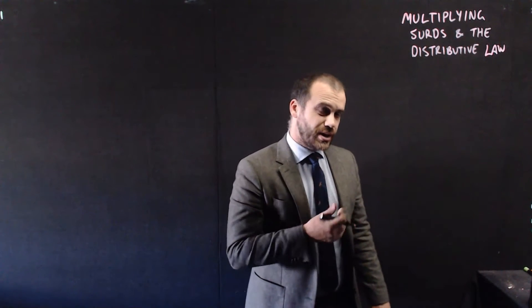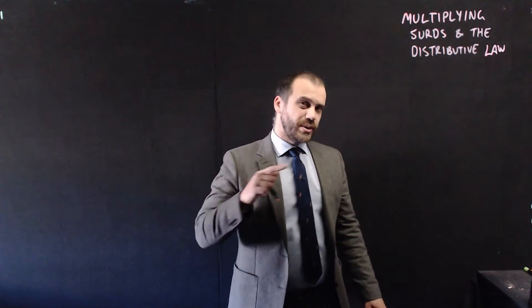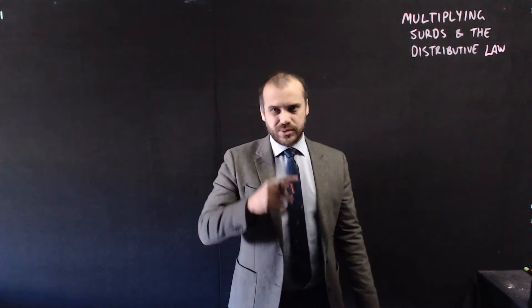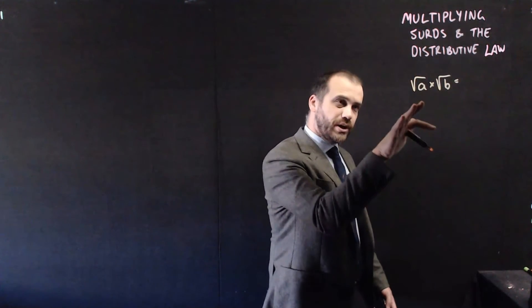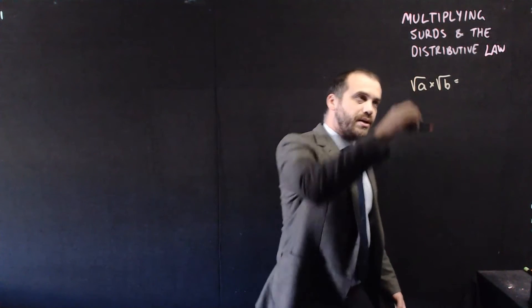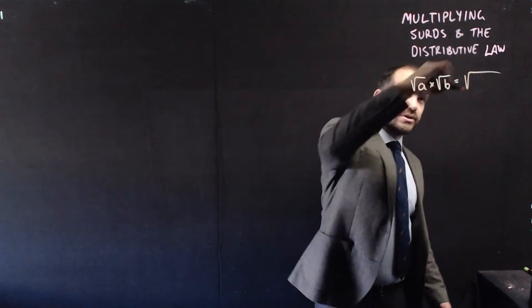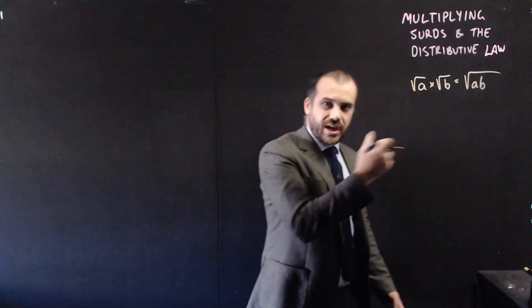We've already learned how to simplify surds, and when we were learning to simplify surds, we snuck in how to multiply surds, we just didn't really talk about it. So the basic rule is if you have two surds multiplied by each other, root A times root B, the answer is going to be root A times B, or just AB.